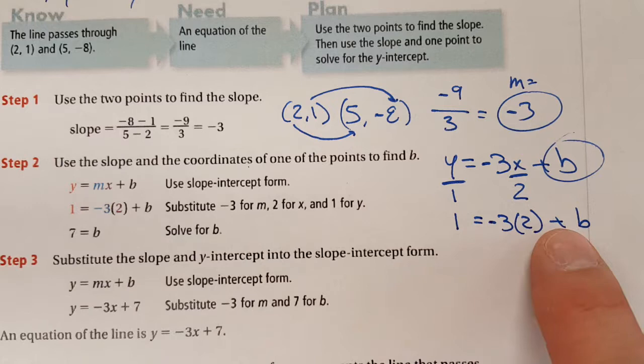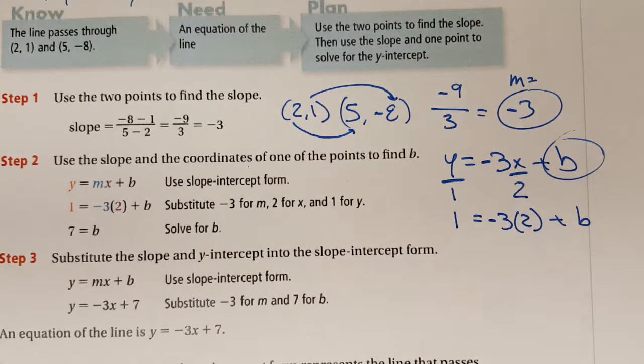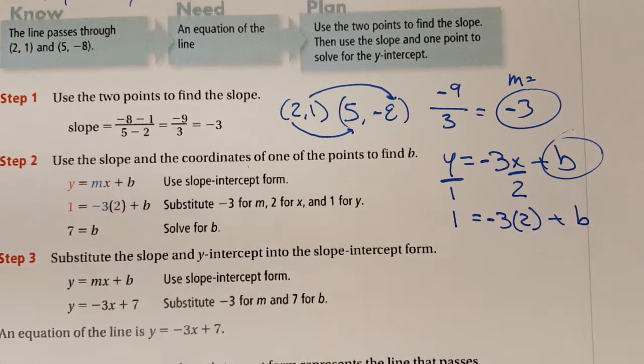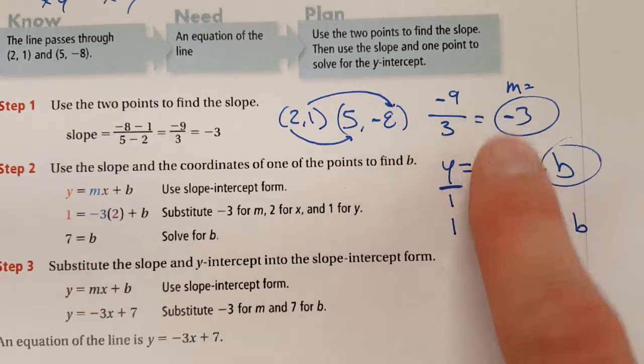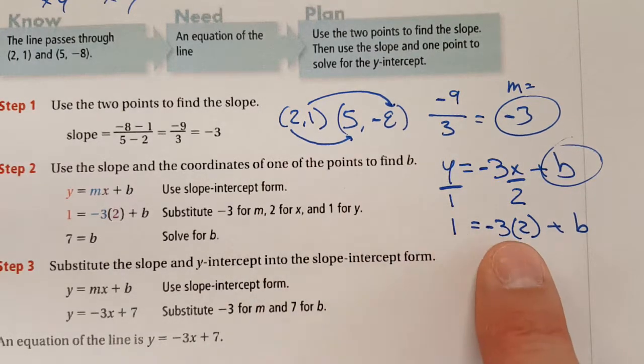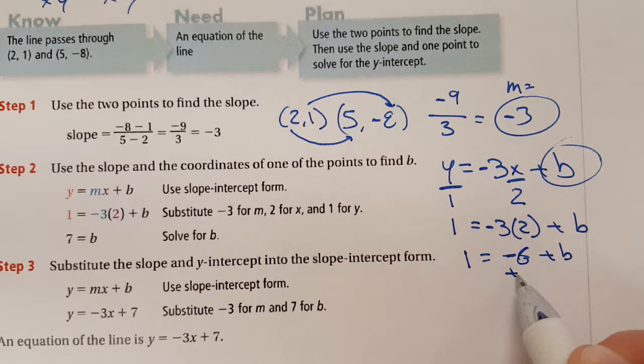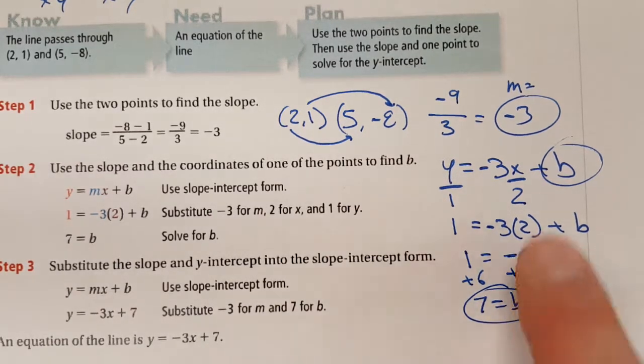One is going to equal a negative three times two plus a B. Why did I do that? Now I only have one thing left to solve. Remember in algebra, if you have a bunch of numbers with one variable, you can remove all of those numbers to find that last variable. So all I did really is I found the slope. I put it into the equation. I picked an X and a Y. I put it into the equation. So I put three pieces in to find the fourth missing piece. So let's do some math here. One is going to equal a negative six plus B. How do I get rid of a negative six? I'm going to add six to both sides using my algebra skills. Seven. There's my Y intercept.